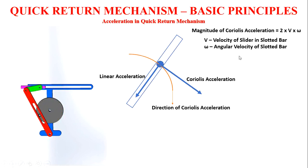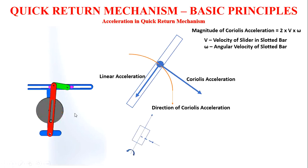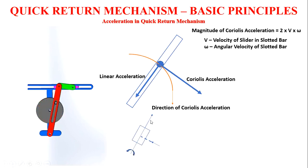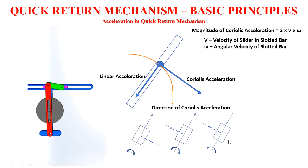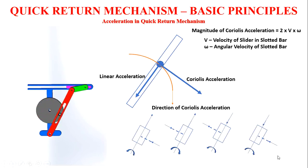To determine the direction of the Coriolis acceleration, we have a certain rule. It depends on the position and rotation of the crank and slotted lever mechanism. Whenever the crank rotates anti-clockwise and the slotted bar is moving up, this gives one direction of the Coriolis component. If the rotation is anti-clockwise and moving up but the position changes, the direction is reversed. Whenever the crank rotates clockwise and the slotted bar moves down, that gives another direction. Whenever the crank rotates anti-clockwise and the slotted bar moves down, that gives yet another direction. So this covers the concept of acceleration in quick return mechanisms.